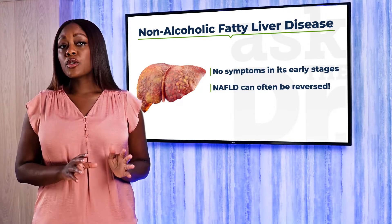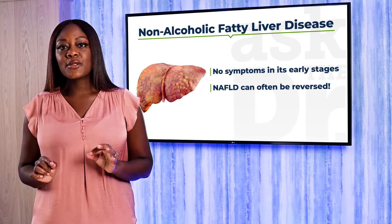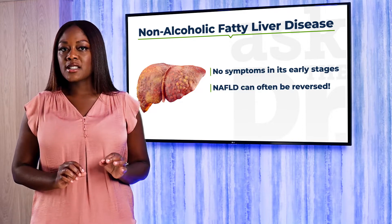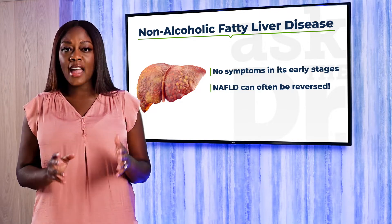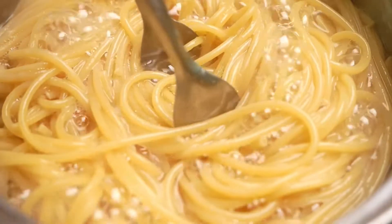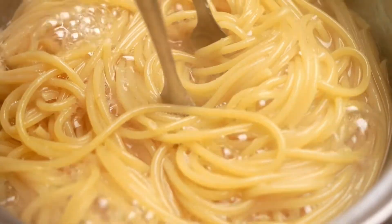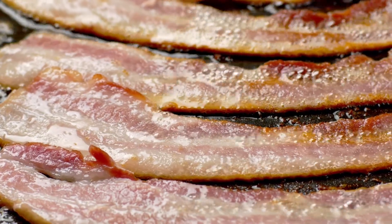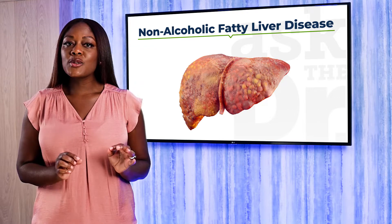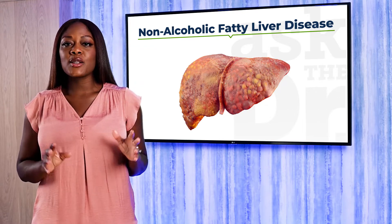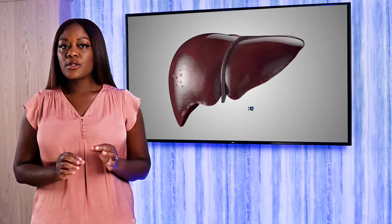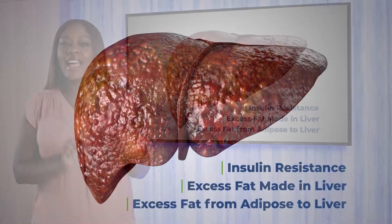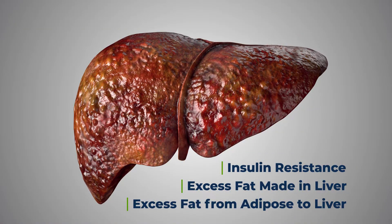Suboptimal metabolic health contributes to fat buildup in the liver over time. For example, insulin resistance, which leads to impaired fat metabolism, is a key driver of NAFLD. Insulin resistance is generally associated with excessive consumption of processed carbohydrates, sugars like fructose and glucose, and saturated fats. In NAFLD, the liver produces fat from excess sugar, causing fat to build up in liver cells. Insulin resistance also increases the amount of free fats delivered to the liver as a result of excessive breakdown of fat tissue.